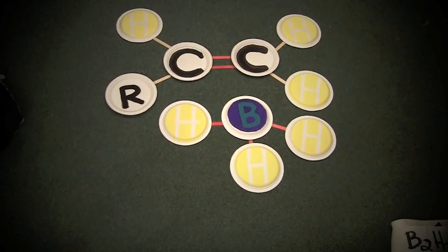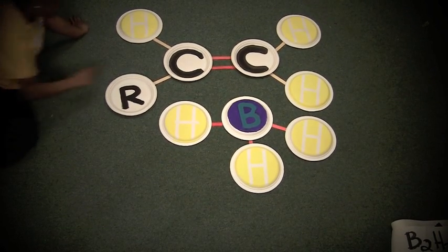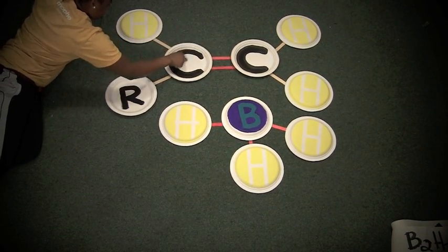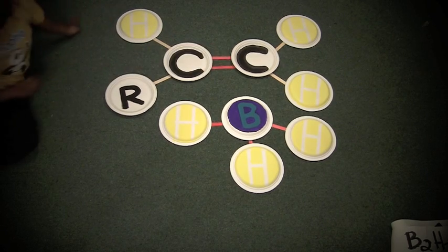The two molecules you see in front of you are an alkene, which has two carbons double bonded to each other. There is also a borane.